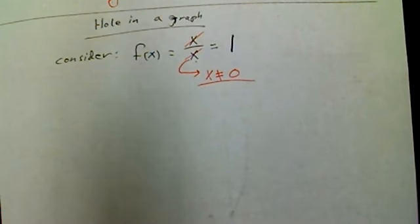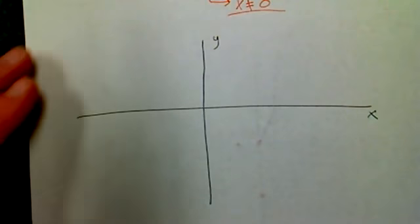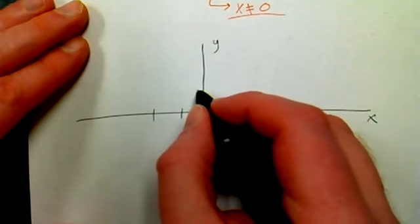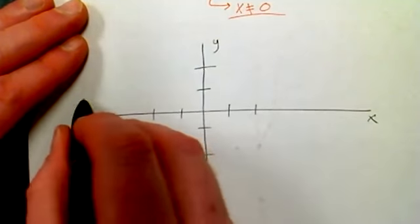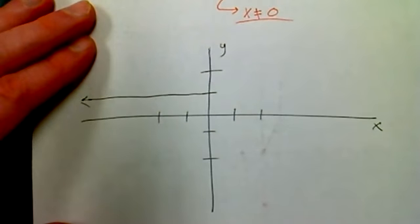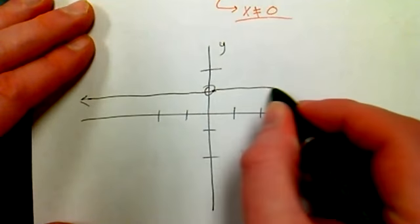So how the heck do I go about graphing something like that? Here's the idea. X and Y. And we know what the graph of f(x) equal to one looks like. It's pretty simple. It's a horizontal line across, right? So we're going, going, going, and that's fine. But we have to put an open circle right here and then continue on.